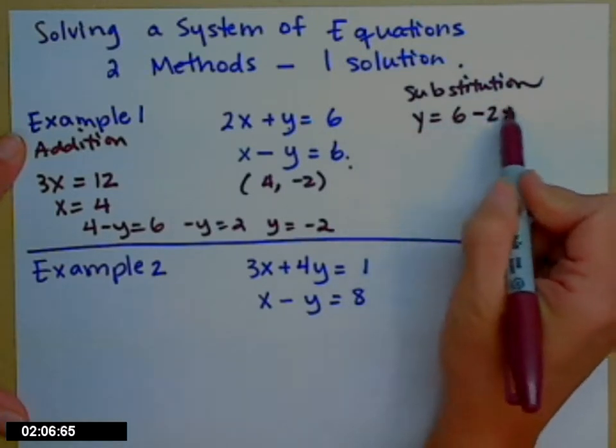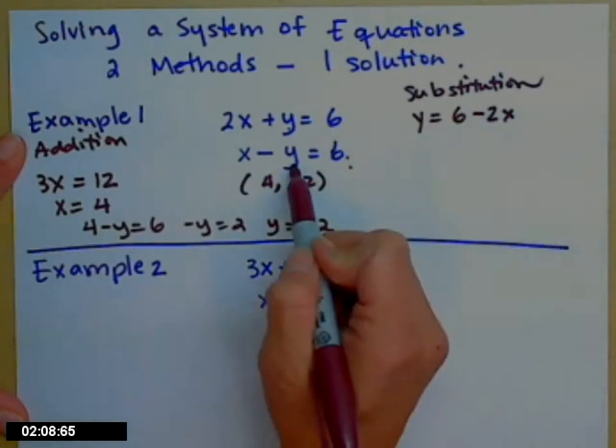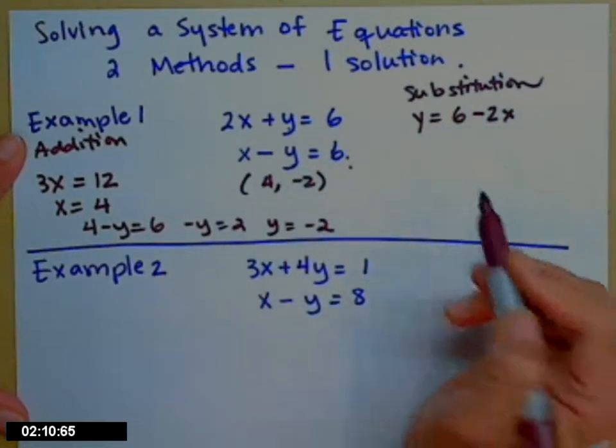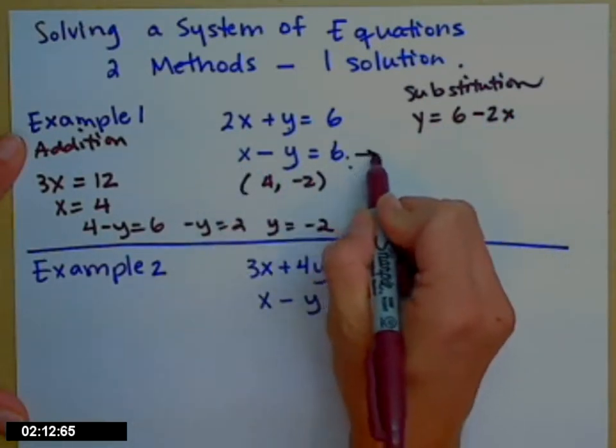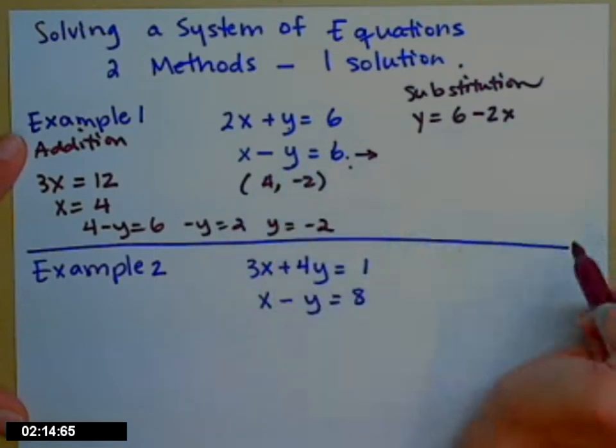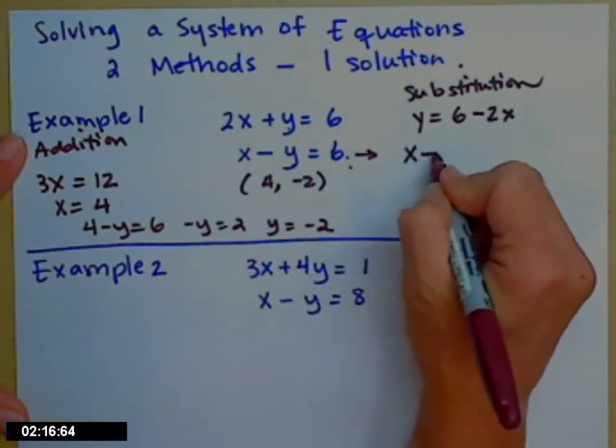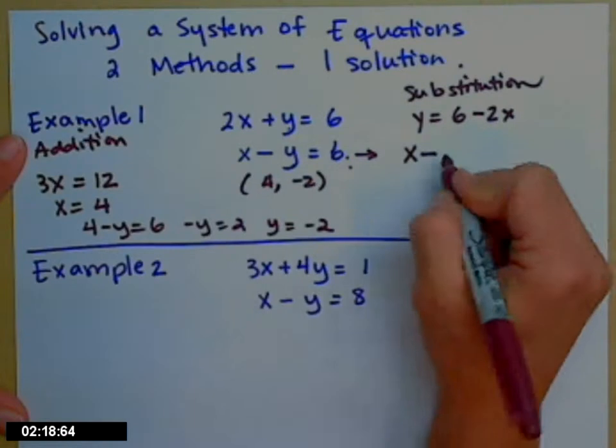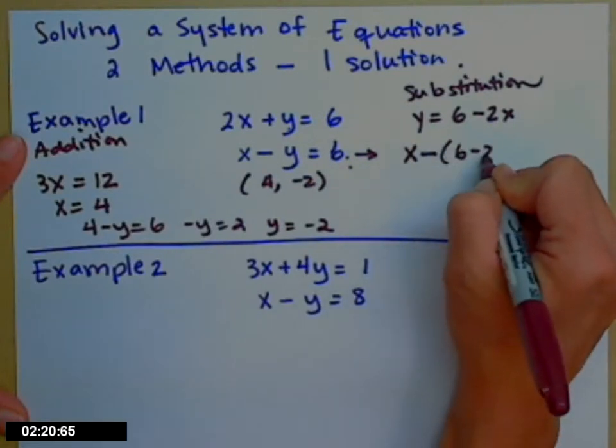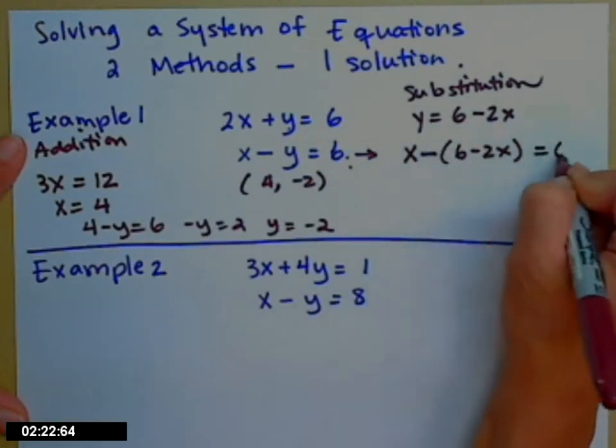Then I take this new expression for y and plug it in for the y in the second equation. So now I'll rewrite that second equation, but instead of y, I'm going to put its new name. So x minus, okay, I have a minus in front and two things here, so parentheses, so that we're careful, equals 6.